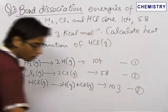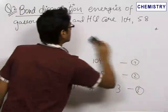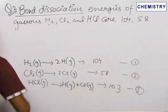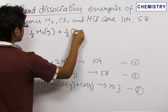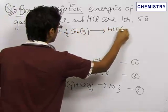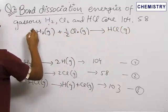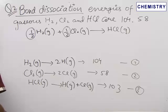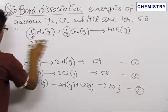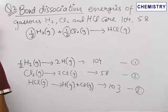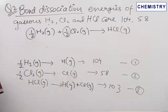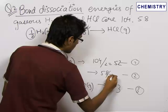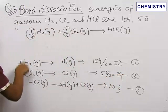We want the heat of formation of HCl gas, so the target equation is: ½H₂(g) + ½Cl₂(g) → HCl(g). Since the coefficients of hydrogen and chlorine are both ½, we divide the first reaction by 2 and the second reaction by 2, giving ½H₂(g) → H and ½Cl₂(g) → Cl. The enthalpies are also divided by 2, becoming 52 and 29 kcal/mol respectively.